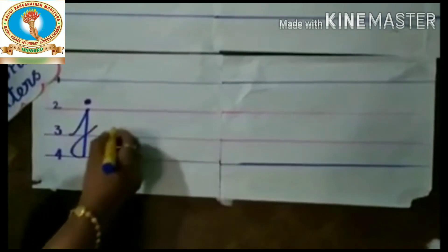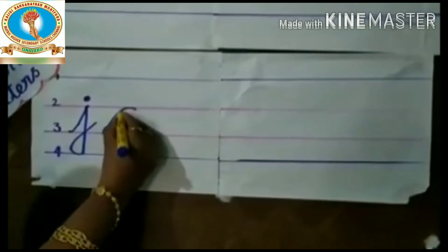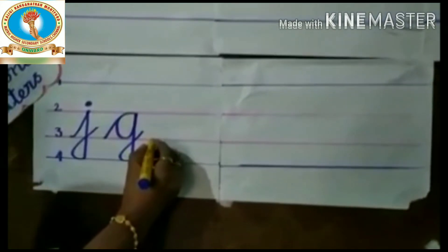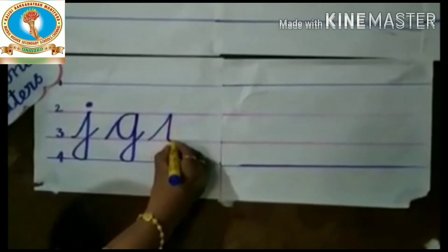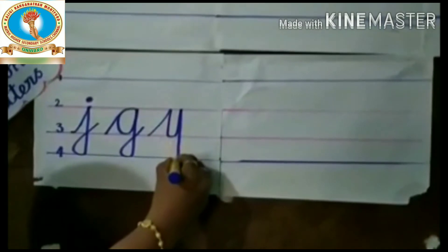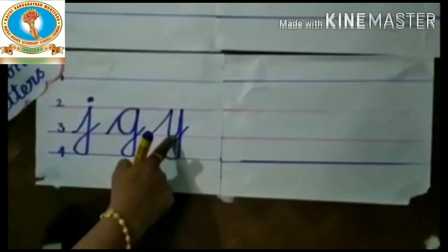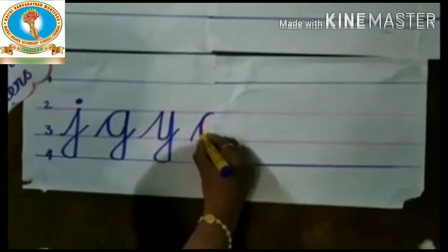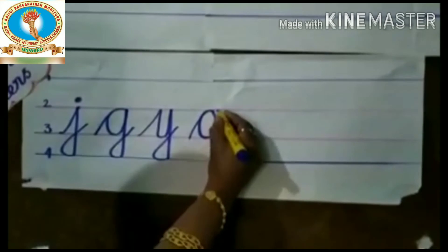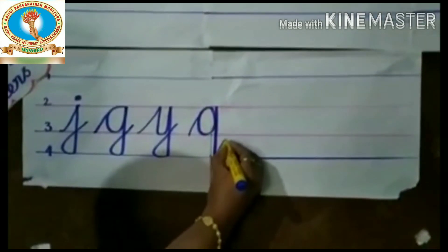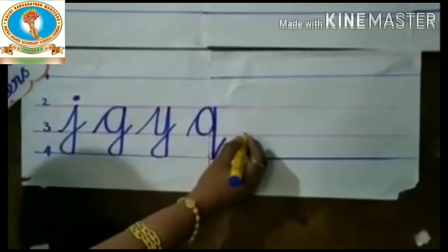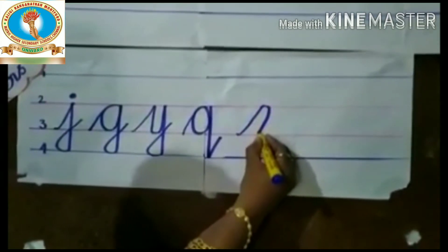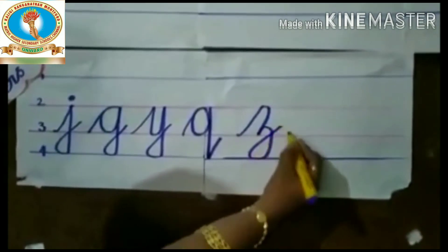The next one is G. Put the slanting line like C, and close the letter. Come down, go up. G. The next one is Y. Put the slanting line and again come down, look like U, to the fourth line. Go up to the third line. The next one is Q. Put the slanting line, look like O, put the slanting line, and go up to the third line. The next one is Z. Put the slanting line and come down to the third line, again come down to the fourth line, and finish it. Z.